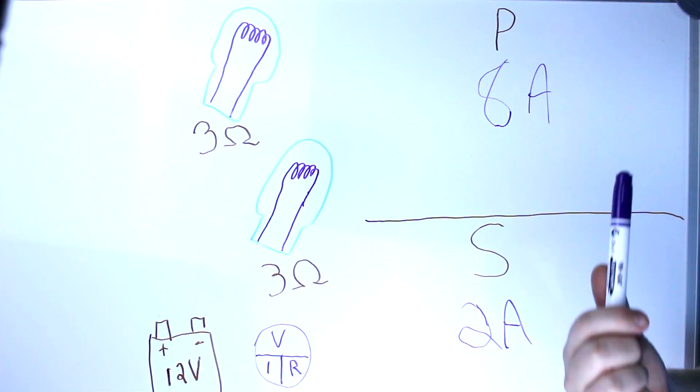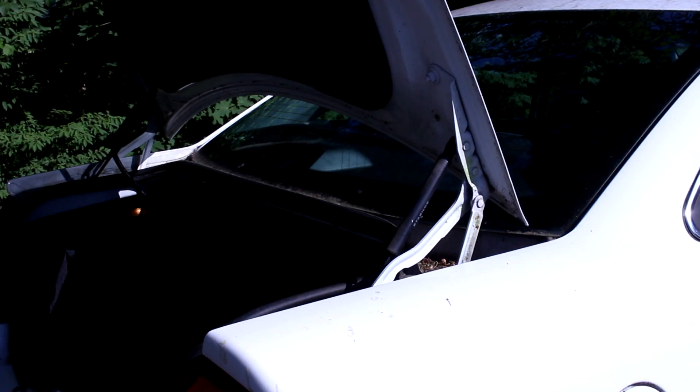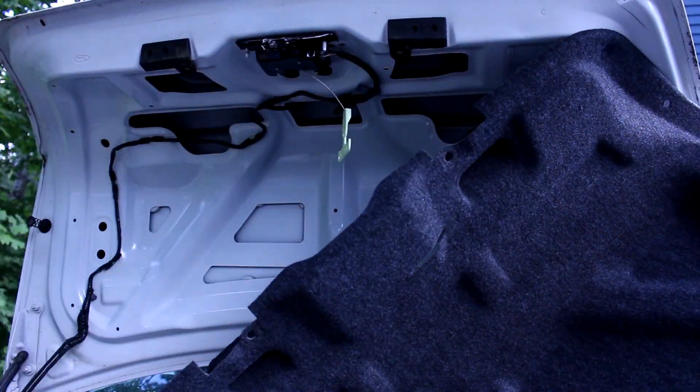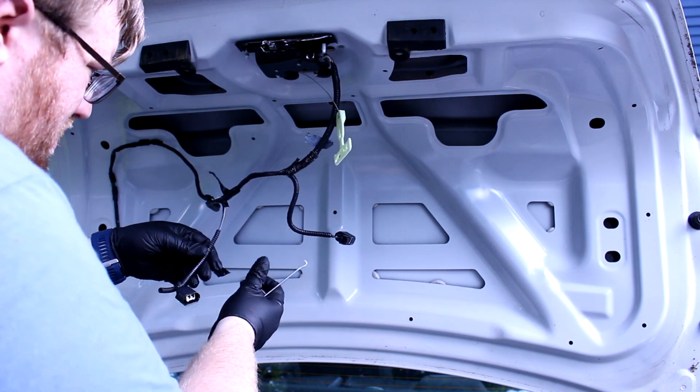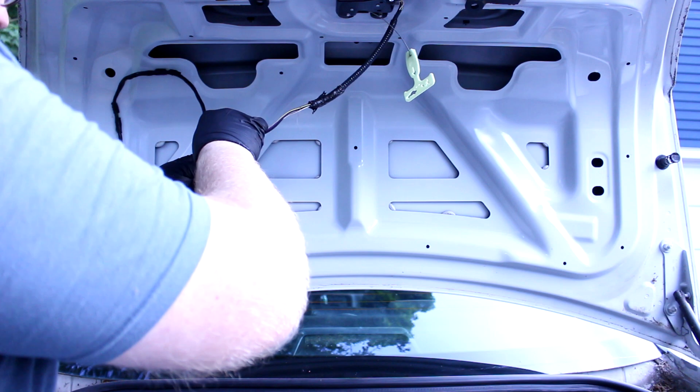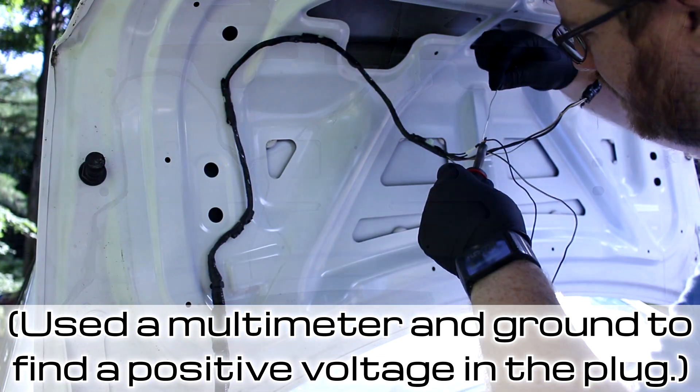Now that we've done the math, let's head out to the Mercury Montego and look at a real-life example of this. First we have to take the protective coating off of these wires. Next we're looking for which wire is positive and binding the two together.